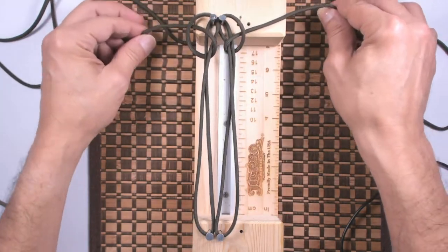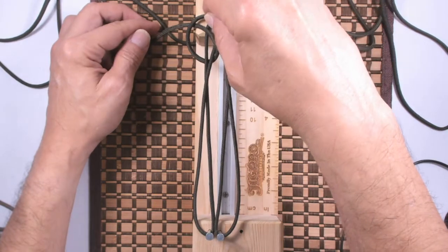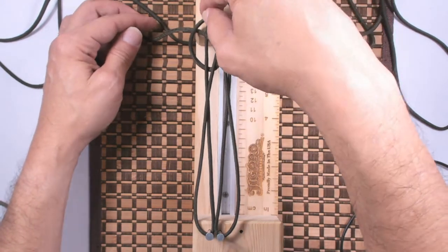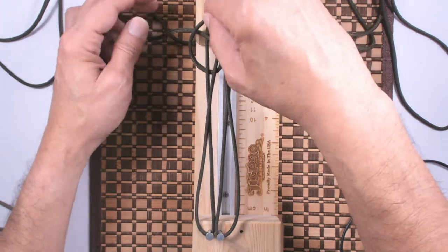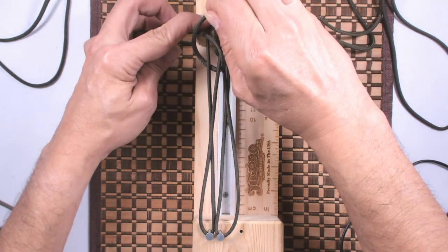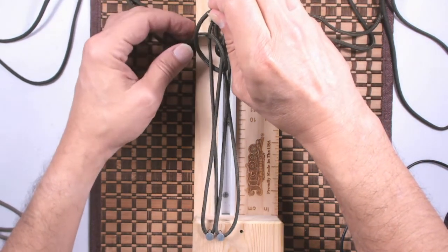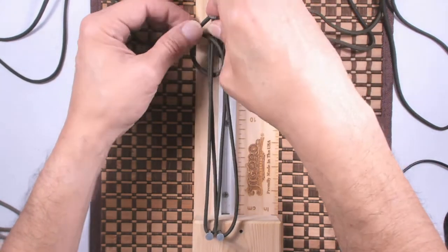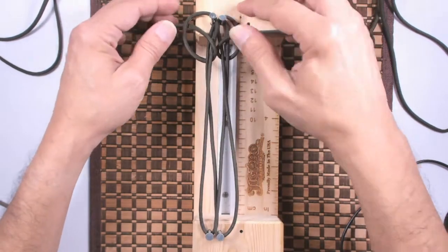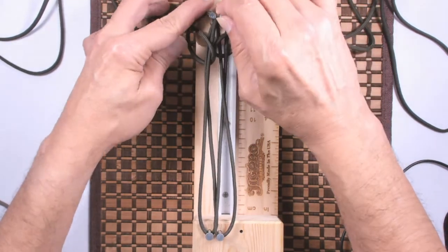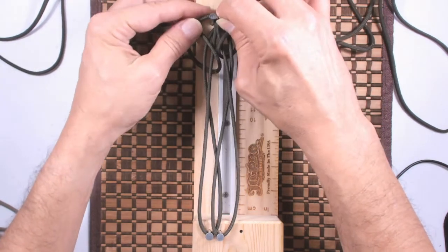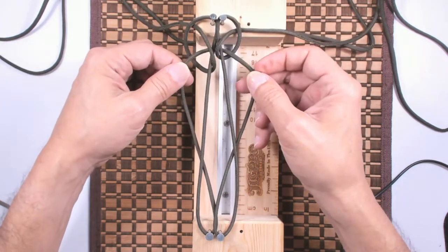Alright, now here's the tricky part. I'm going to pull the nails out one at a time. I'm going to hold on to the cord, left cord, and I'm just going to go over the loop in the center. I'm going to pull out the right nail and I'm going to go over the loop in the center. So it's going to be like this. And here's my hitch.